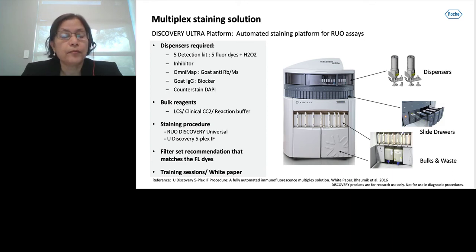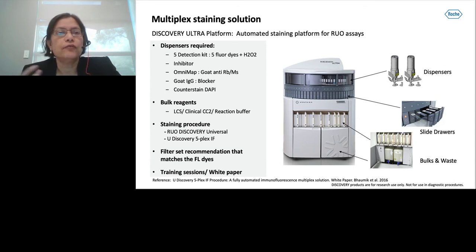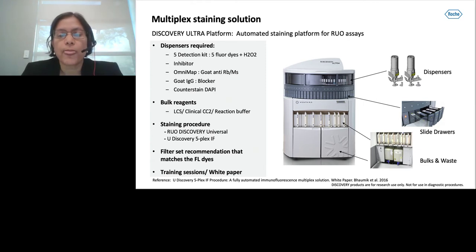For a complete five-plex stain you need up to 19 dispensers. The next carousel consists of 30 slide drawers. Each slide has an individual reaction chamber and heating pad underneath, which plays an important role for the success of the five-plex assay. There is a bulk container holding three to seven liters of fluid consisting of liquid coverslip, wash buffer, CC1, CC2, etc. Finally, two buckets hold waste at the bottom of the instrument.